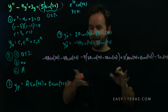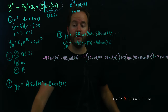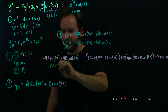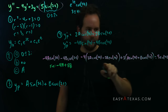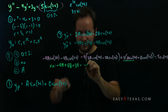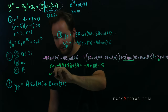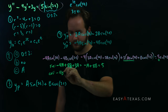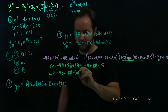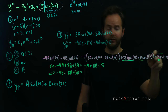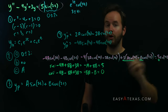After substituting into y'' − 4y' + 3y = 5·sin(2t) and expanding, collect sine terms and cosine terms separately. Sine terms: −4a + 8b + 3a = −a + 8b = 5. Cosine terms: −4b − 8a + 3b = −8a − b = 0, since there are no cosine terms on the right-hand side.